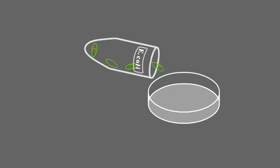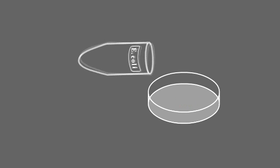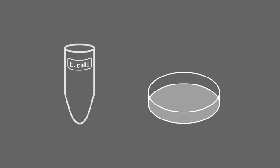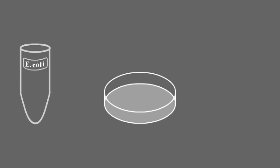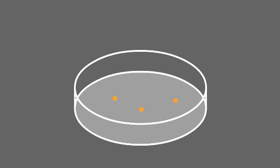Only the cells that acquired the plasmid have resistance to the antibiotic and can grow on such a medium. After overnight incubation at 37 degrees, each transformed cell produces a colony of identical cells, oftentimes called a clone.